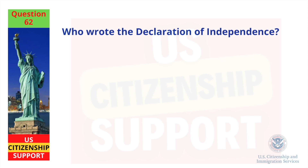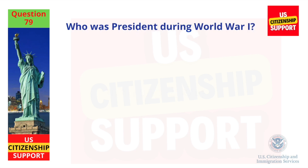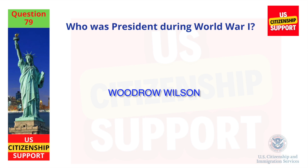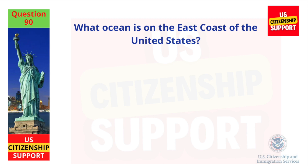Who wrote the Declaration of Independence? Thomas Jefferson. Who was President during World War I? Woodrow Wilson. What ocean is on the East Coast of the United States? Atlantic Ocean.